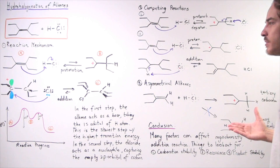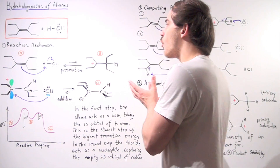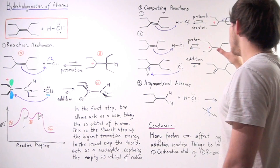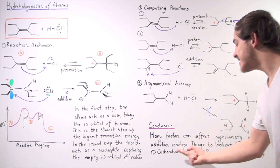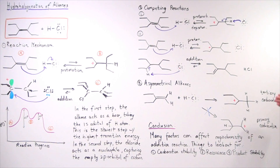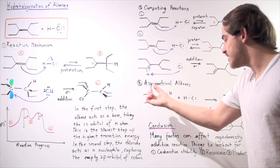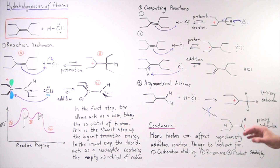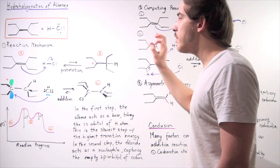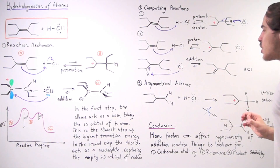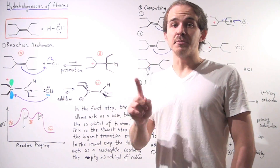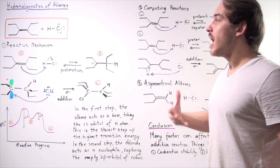Many factors can affect the regiochemistry of our addition reaction. Regiochemistry refers to the different types of intermediates and products that can be formed from the same two reactants. Things to consider: first, carbocation stability — which carbocation intermediate is more stable; second, resonance, which we'll discuss in the next lecture; and third, product stability — which product is the most stable. The most stable product will shift equilibrium further toward that side, producing more of that stable product under thermodynamic conditions.